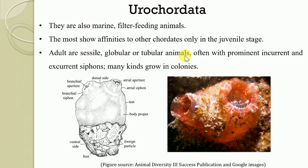In the case of Urochordata, they are also referred to as tunicates. They are marine organisms and filter feeding animals. The most prominent tunicates are the sea squirts, which show affinity to other chordates only in the juvenile stage — that is, the presence of a notochord. But after development into the adult, some characters are lost. The adult sea squirts are sessile, globular or tubular animals, often with prominent incurrent and excurrent siphons, and many kinds of this organism grow in a colony.